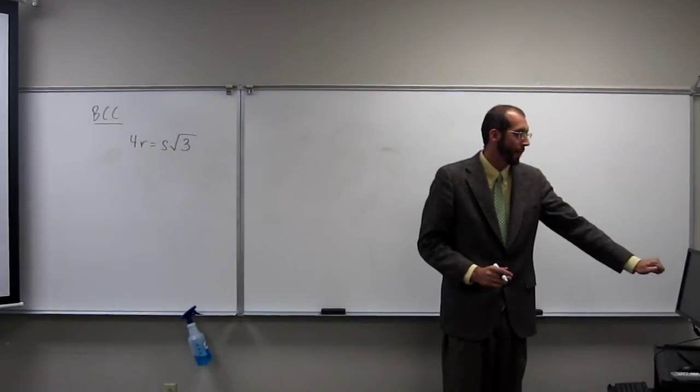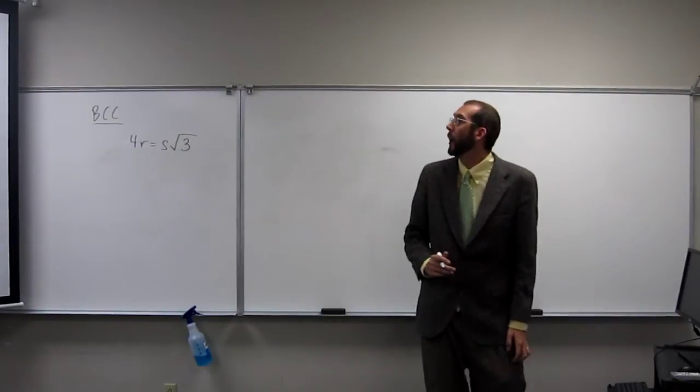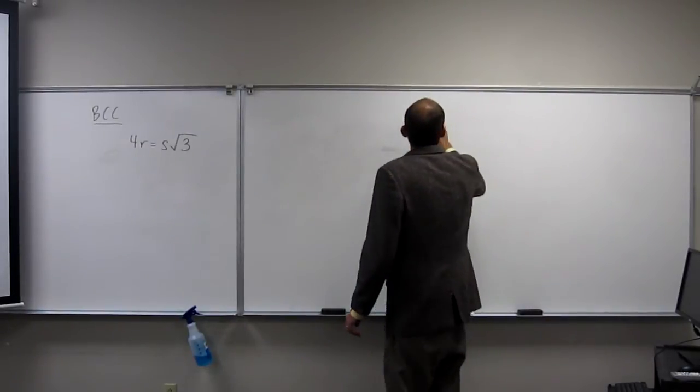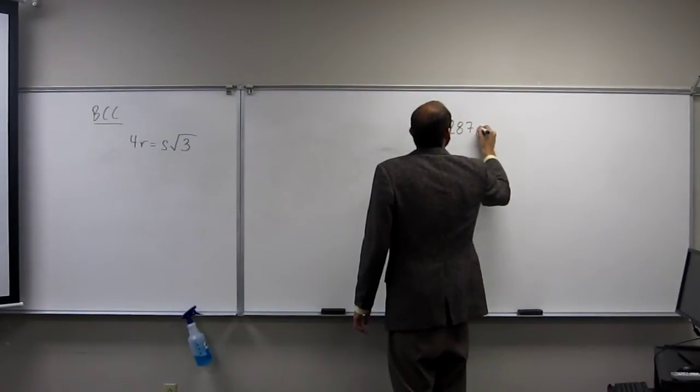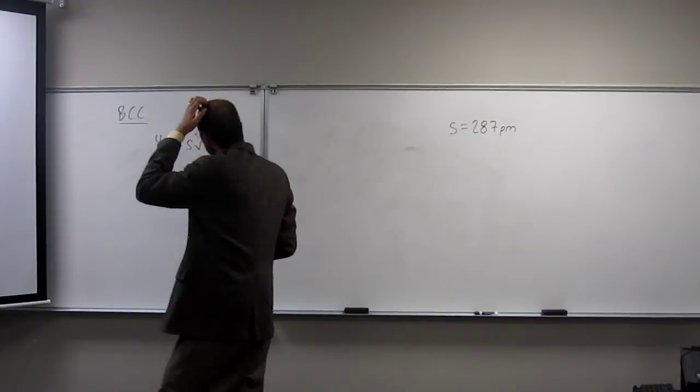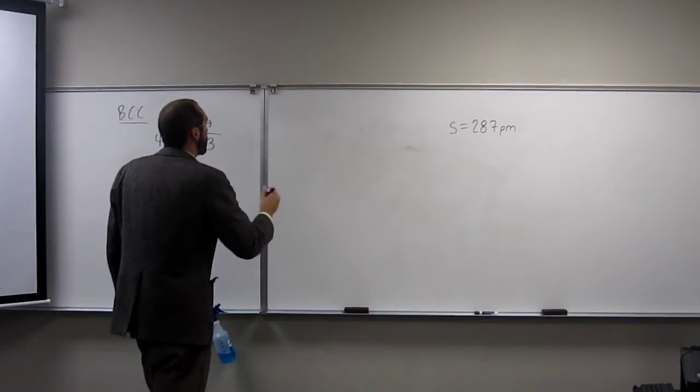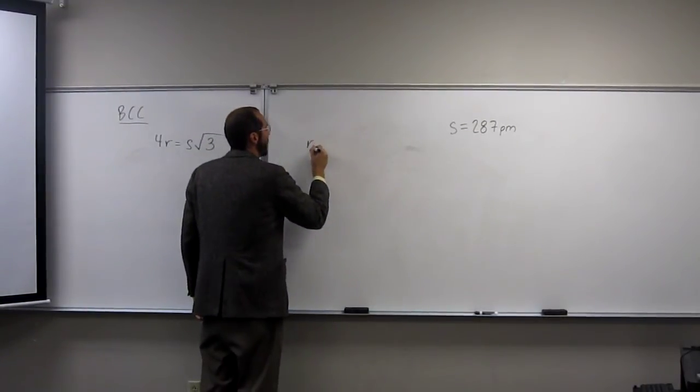It says that the side of the cubic cell for this is 287 picometers. So we're looking in this case for the radius of the iron atom.